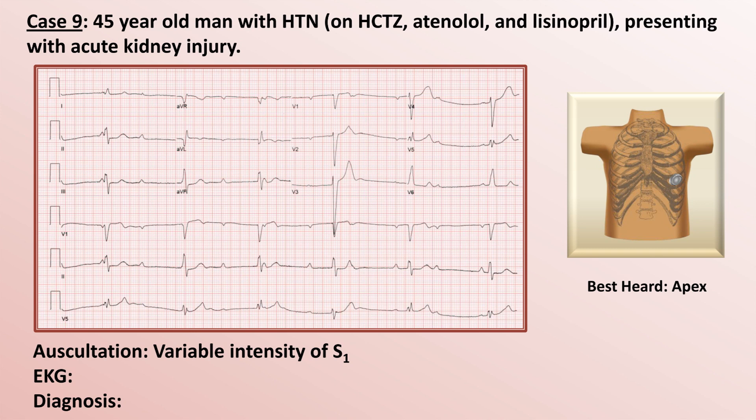Starting with the rate, the patient is quite bradycardic. Counting beats across the 10-second EKG recording and multiplying by 6 gives a ventricular rate around 36 beats per minute. There seem to be more P waves than QRS complexes. The P waves themselves appear normal, but there is no apparent relationship between them and the QRS complexes — they march straight through without any impact. This is complete dissociation between atrial and ventricular electrical activity. The combination of sinus P waves, complete AV dissociation, and a bradycardic ventricular rate is indicative of complete heart block.